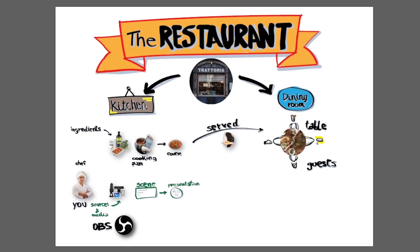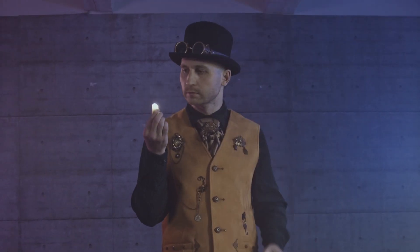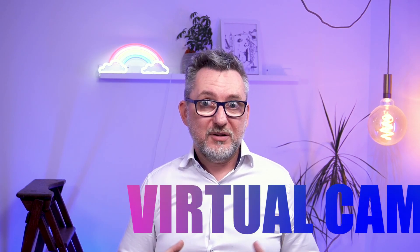So once you've created all your scenes with your ingredients you're ready to serve the meal — you'll put the presentation on the plate and serve it to your guests. The guests are your audience and the table is where the presentation is served: Zoom, Teams, or Google Meet. But we need a waiter. How do we bring the presentation from OBS to your video conferencing platform? The waiter is called Virtual Camera. It's a piece of software already included in OBS that takes the output from OBS and plays a trick on your video conferencing platform, making it believe that the signal coming from OBS is actually a signal coming from a camera. But in reality it's not a real camera — that's why it's called Virtual Camera.